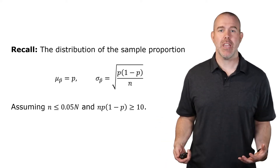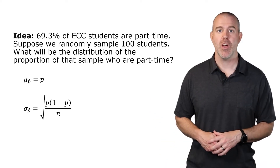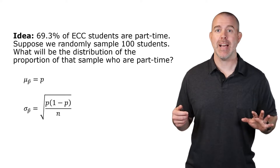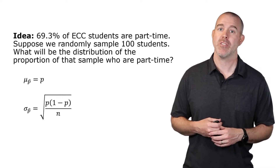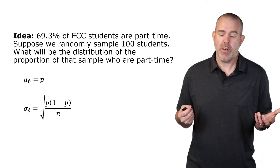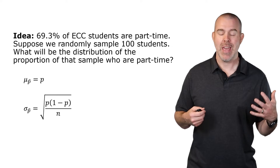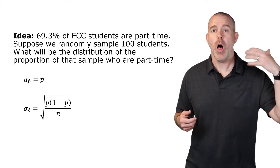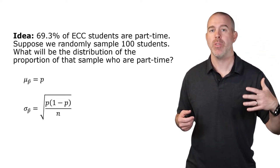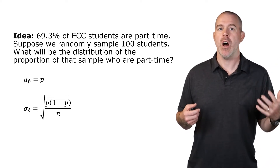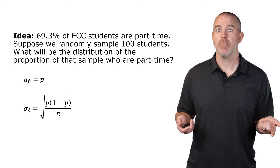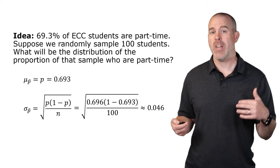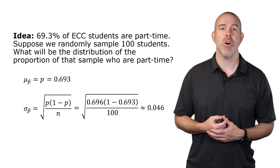To motivate this concept of a confidence interval, we're going to look at some Elgin Community College data. Most of our students are part-time — about 69.3% according to ECC data. If we randomly select 100 students, the mean of the sample proportions is 0.693, and the standard deviation works out to about 0.046.